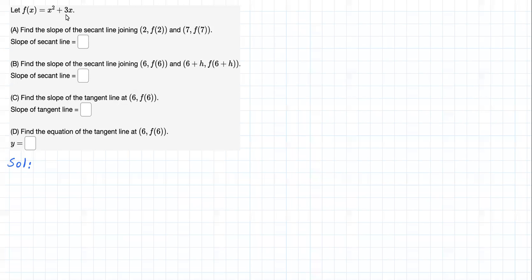Let f(x) = x² + 3x. Part A, find the slope of the secant line joining (2, f(2)) and (7, f(7)). Let's start there with part A.